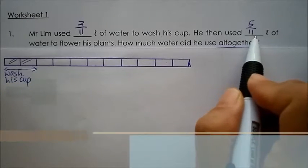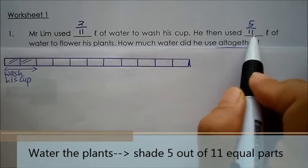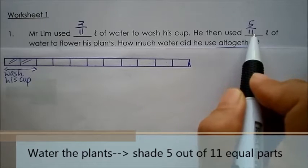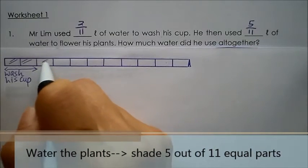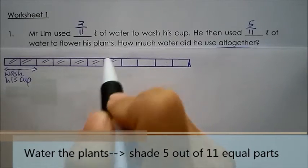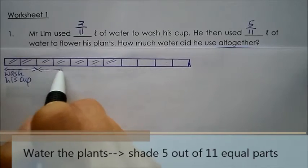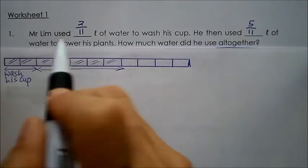He then used 5 elevenths liter of water to flower his plants. Therefore, out of the 11 equal parts, he used 5 parts to water his plants. So one, two, three, four, five. Five out of the 11 equal parts to water his plants.